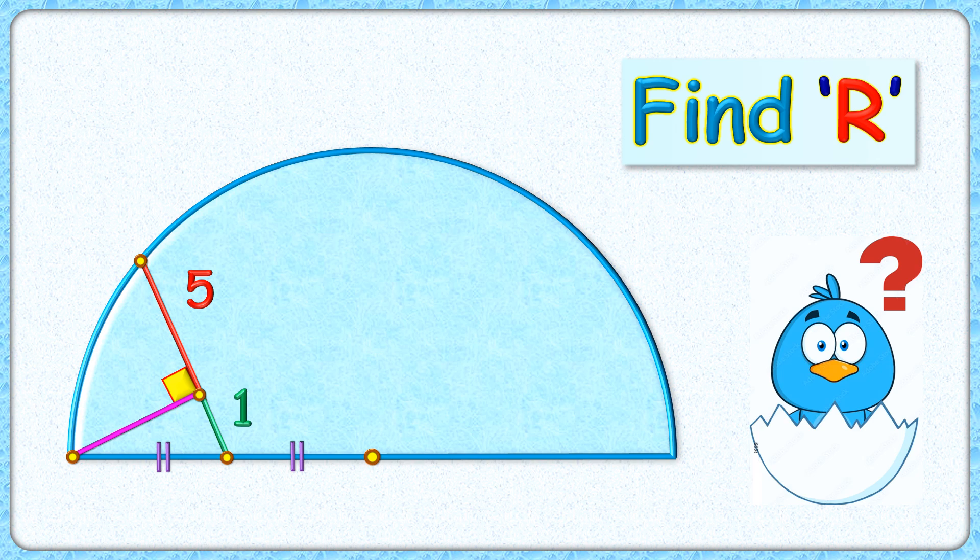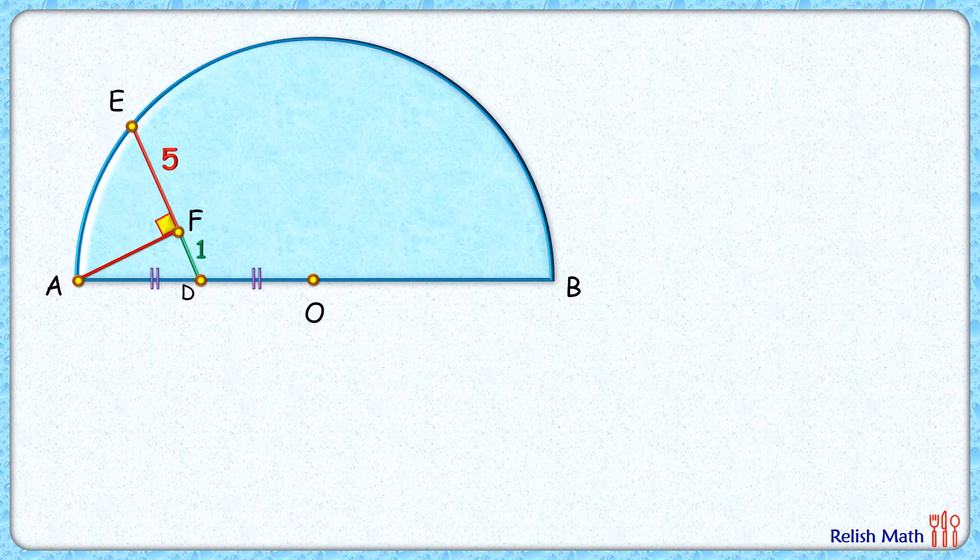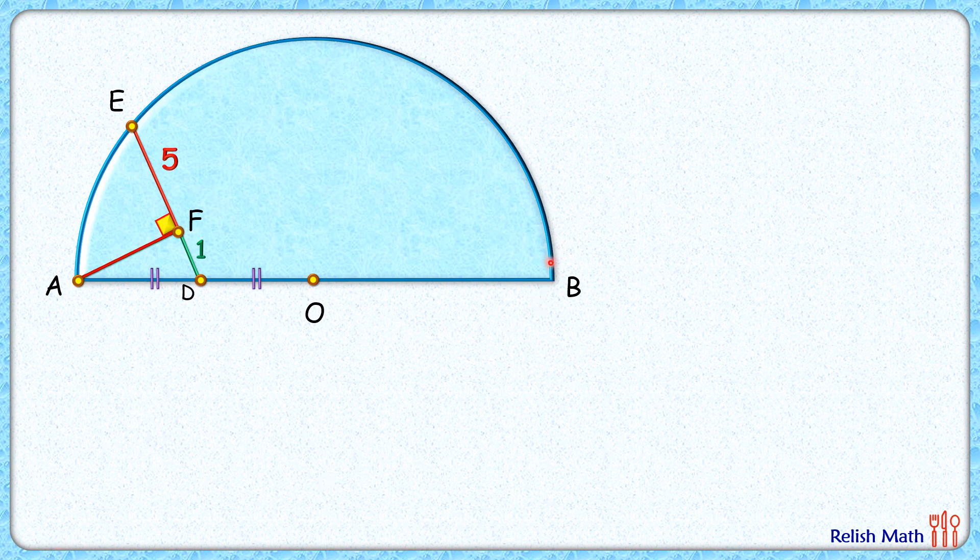This question looks fun to solve! Here we're given a point dividing the radius of this semicircle into two equal parts, and this perpendicular from the endpoint of the diameter is dividing this line segment into lengths of 5 centimeters and 1 centimeter. The exciting part is that with this limited data, we have to find the radius of the semicircle.